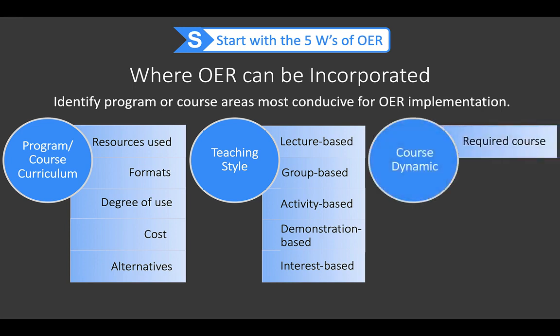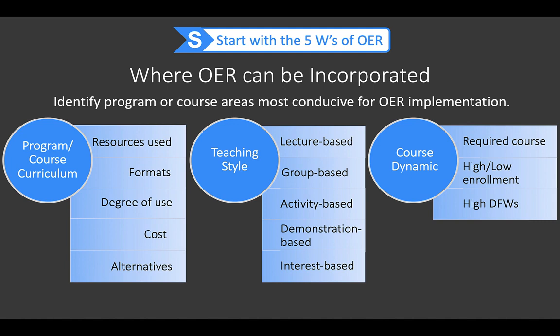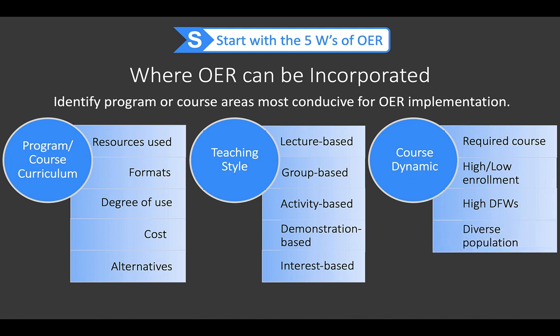Consider using OER for required courses and ones with high or low enrollments, high DFW rates — based on the cost, utilization, and accessibility of the textbook — and consider replacing it with open e-text, scholarly articles, and multimedia resources. For courses with more diverse populations, utilize OER to decrease cost and increase accessibility, the perspectives represented within the content, and the formats of the current learning material. For online courses, assess use of OER based on accessibility, availability, utilization, and cost of the learning material. For in-person courses, cost, utilization, and accessibility of course material are the determining factors of where OER are implemented.